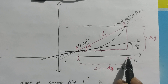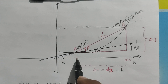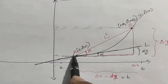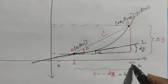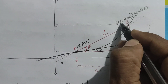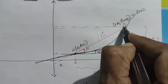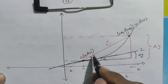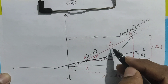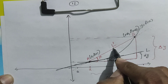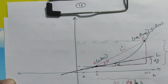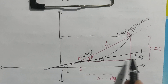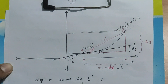Consider y equals F of X. At point x, the corresponding ordered pair is (x, F of x), named point A. At x plus h, the corresponding point is (x plus h, F of x plus h), named point B. Joining A and B gives the secant line, called L dash. At point x, we draw the tangent line, called L.